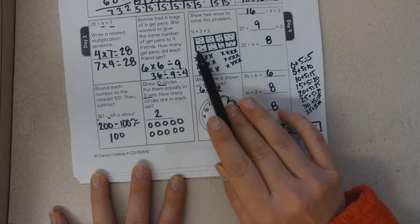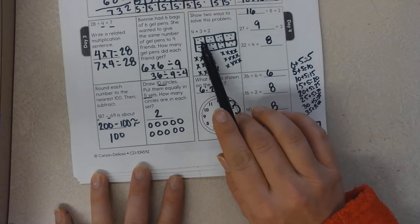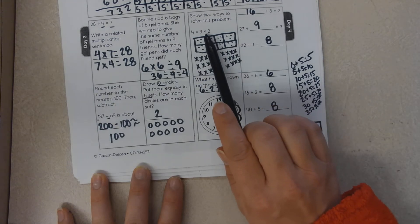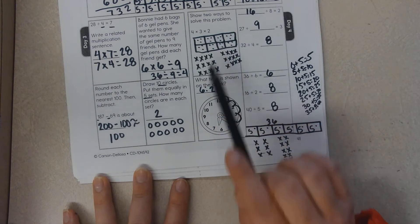So what I did is I drew a bar model, and I multiplied four groups of three and then I did it twice. So this is two groups of four times three.